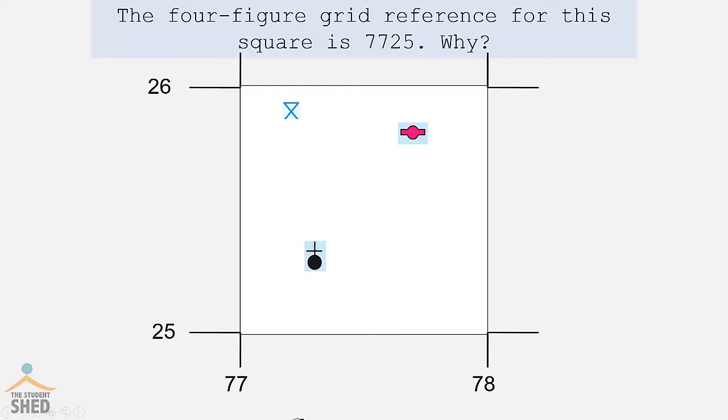It's because when we went along the corridor and up the stairs, we ended at 7725. Also because 7725 represents the lower left-hand corner of where these items are located. So the lines meet at the bottom left.